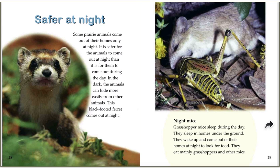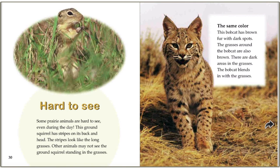Some animals are safer at night than during the day because they can blend in or be more camouflaged at night. The ground squirrel has stripes on its back and head to make it blend in with the grass. Bobcats have brown fur with dark spots — because the grasses are sometimes brown, the dark spots help it blend in where other animals can't see it.